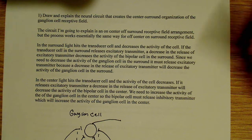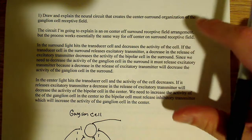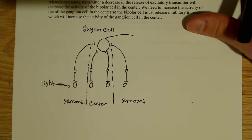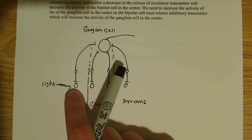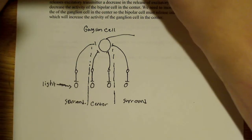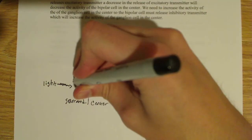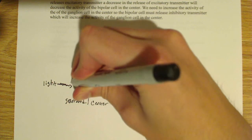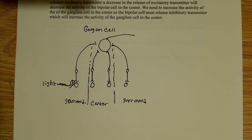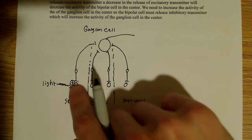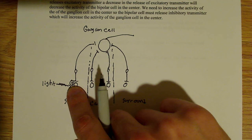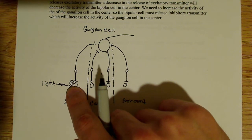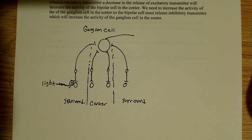One of the more important points to remember is that when light hits the transducer cells, it decreases their activity. Light is hitting this transducer cell right here, decreasing the activity of it. I'm going to make this excitatory. There's no right or wrong way of doing this — I could just as easily have said it releases inhibitory transmitter — but in this case, I'm going to choose to use excitatory transmitter.